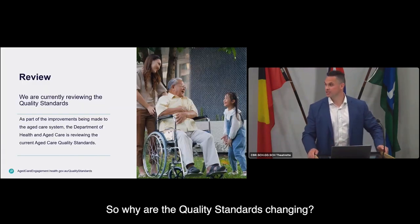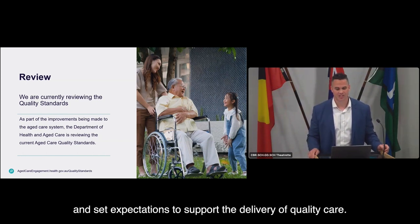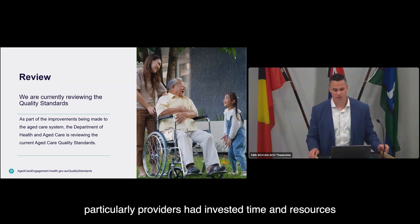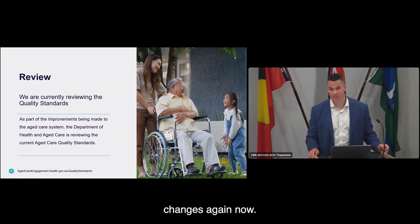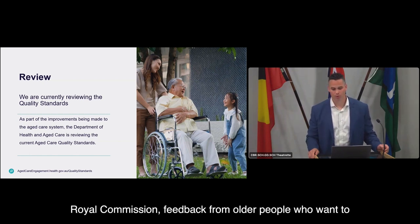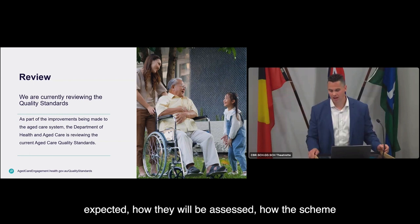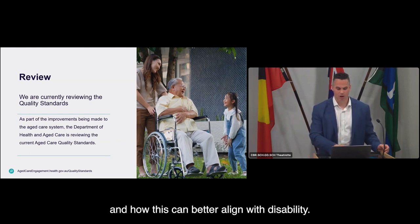So why are the quality standards changing? The current quality standards were introduced in 2019 and set expectations to support the delivery of quality care. We appreciate that the aged care sector, particularly providers, have invested time and resources to adjust their systems and practices to meet the outcomes required under the current standards. There's a range of drivers for the changes, including responding to the findings from the Royal Commission, and feedback from older people who want to better understand what they can expect from providers.